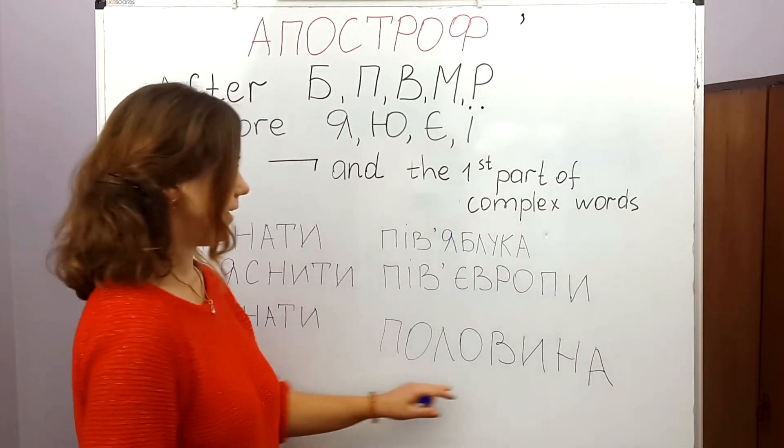So now let's read again these three words: З'єднати, Роз'яснити, Об'єднати. And we have two more words.